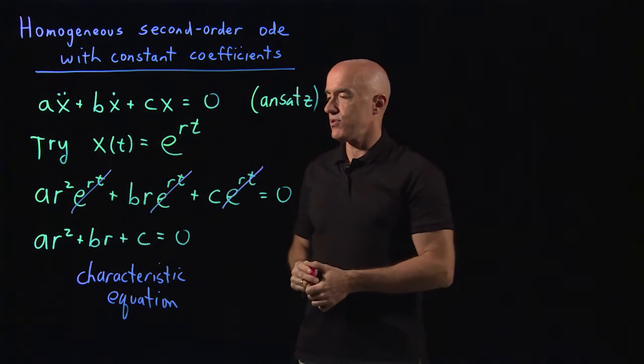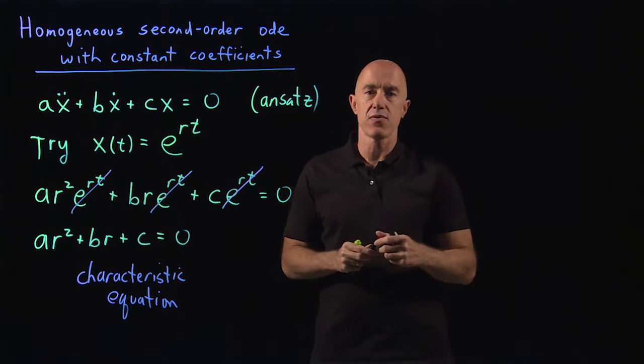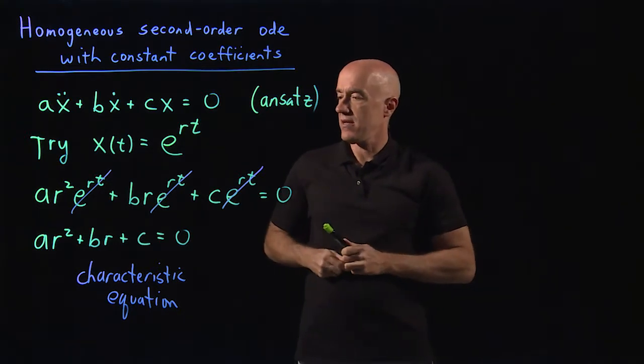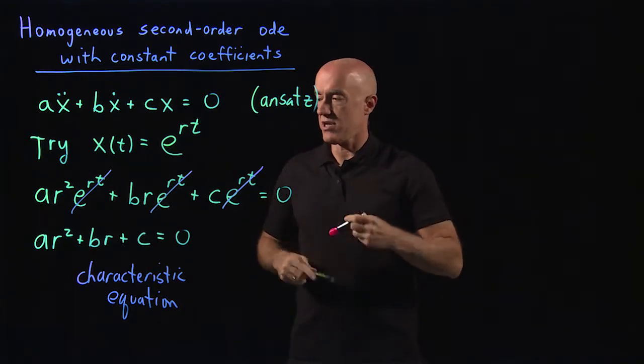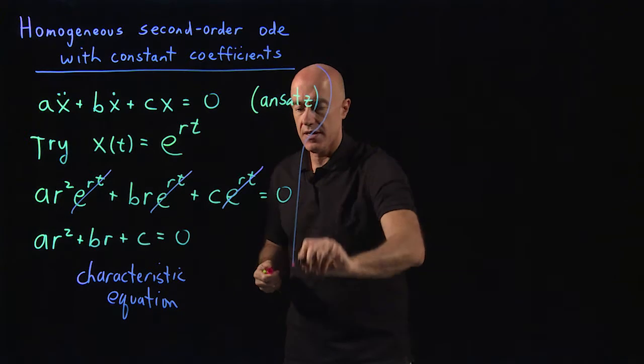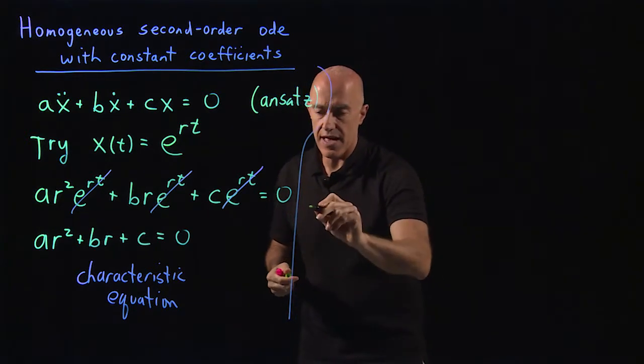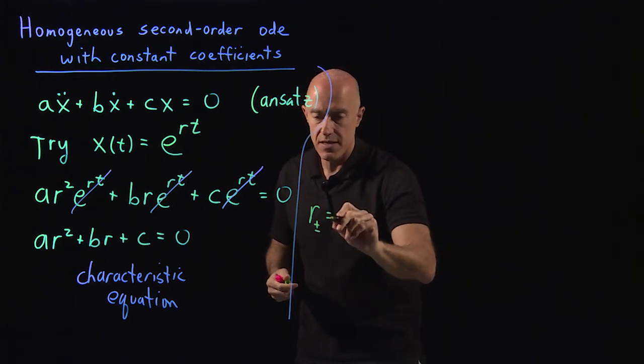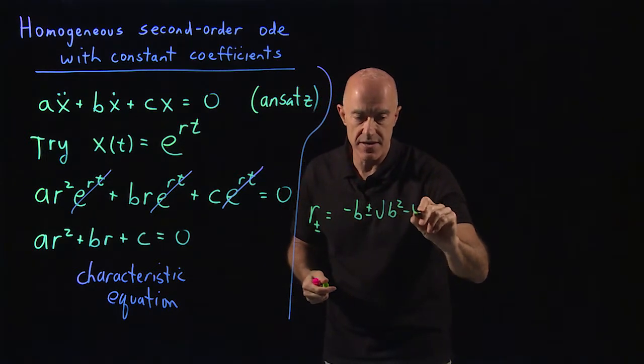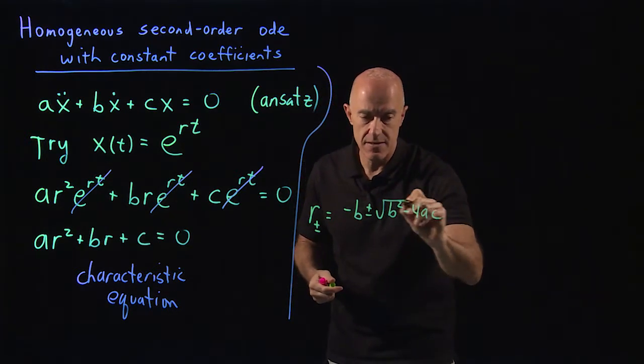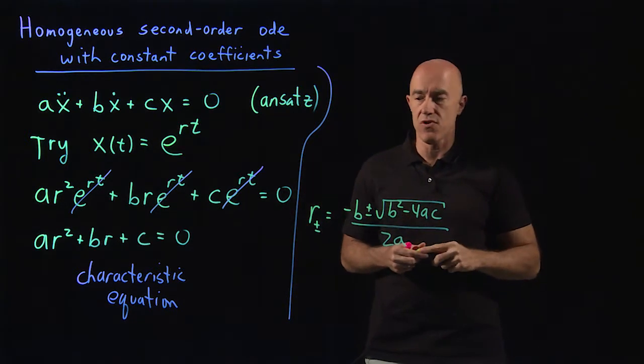What are the solutions of this equation? There are actually three cases that we have to deal with. First of all, let's write down the solution. The solution of a quadratic equation of that form is just given by the quadratic formula. So we have two solutions: r plus or minus equals negative b plus or minus the square root of b squared minus 4ac divided by 2a, just the quadratic formula.